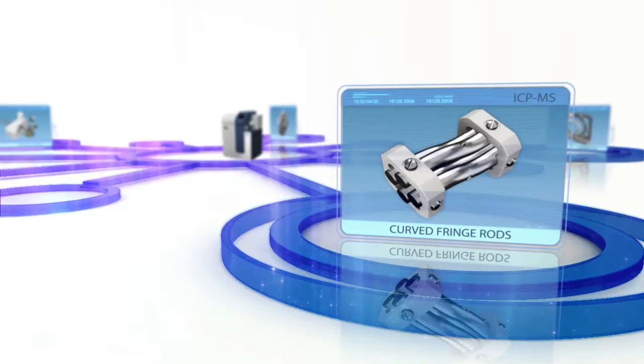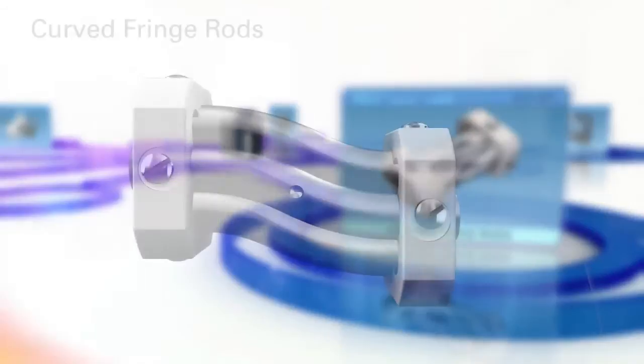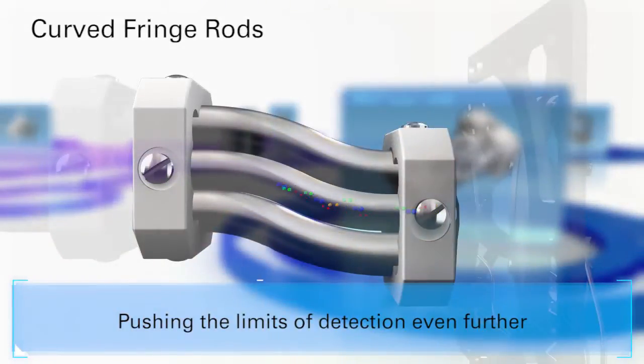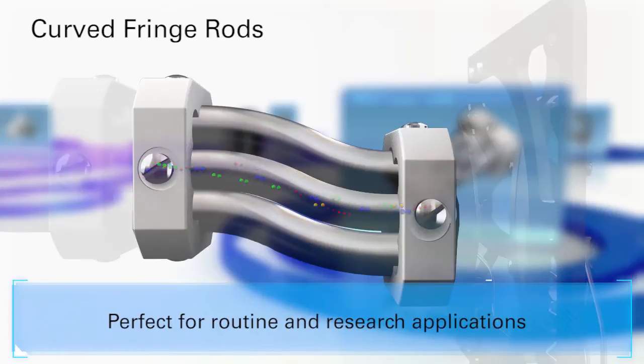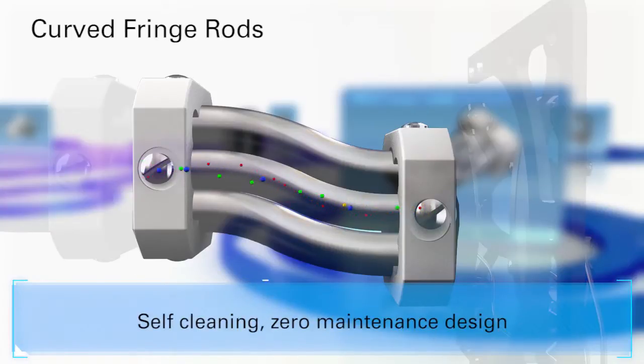Curved fringe rods. The high-efficiency 90-degree ion mirror removes problematic photons and neutrals, while the off-axis curved fringe rods prevent excited species from being detected. This results in exceptionally low background noise.